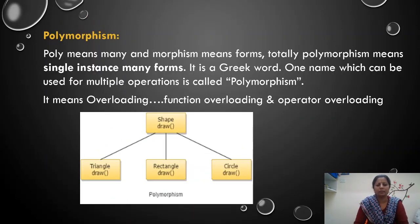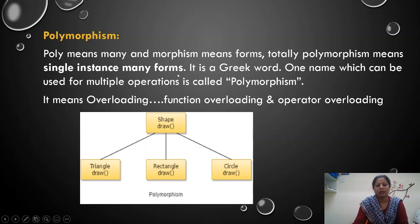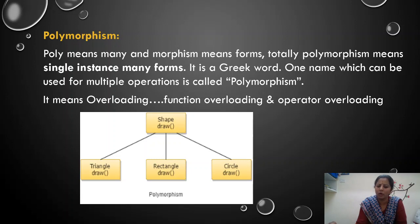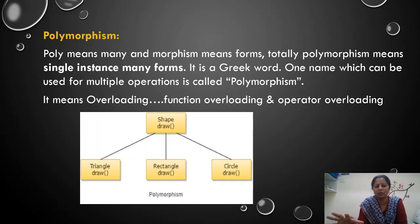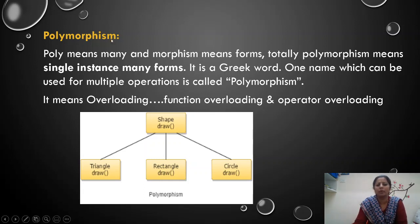Next is polymorphism. Polymorphism means single instance, multiple methods — or many forms. We have already discussed this in function overloading — finding the area of different shapes. The function name is the same, but we are performing different operations with a differing number of arguments; that is called function overloading. A same name or same kind of instance is used to perform multiple tasks in multiple methods. That is called polymorphism.